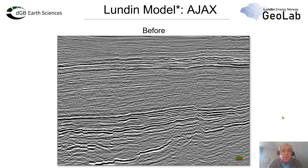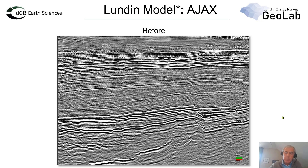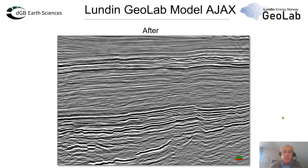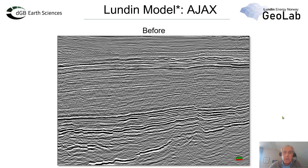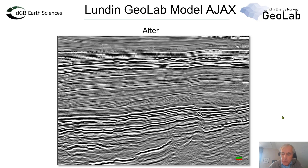We can also suppress random noise with a machine learning model. This is an example of a trained model which is supplied with our machine learning plugin. This model was trained by London Geolab, nowadays Acker PP. This is before and this is after — and you can see that this filter does a really good job in removing the random noise. It also changes the amplitude spectra.